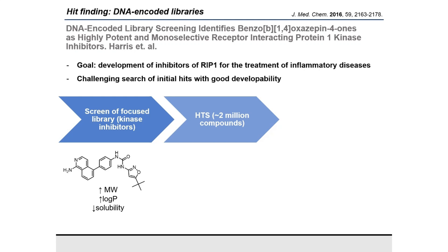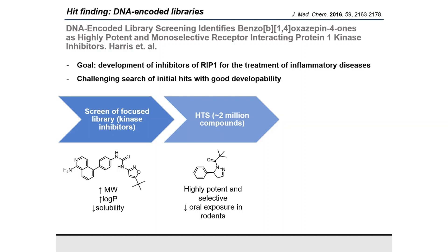They followed that with a high-throughput screen of their whole compound library. Because the initial focused library hadn't yielded sufficiently drug-like chemical matter, they screened the full GSK library of more than two million compounds and found a new series of hits — highly potent, selective, small, and efficient. However, these had really poor oral exposure in rodents in vivo, so this lead series also had to be discontinued. At this stage, they moved on to screening a DNA-encoded library with more than seven billion compounds.